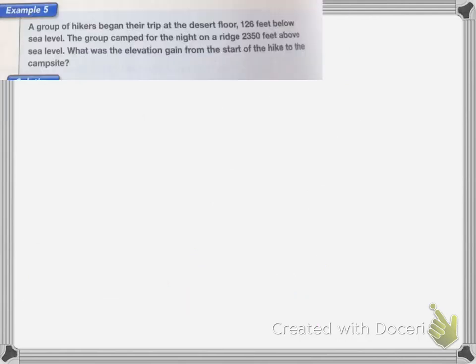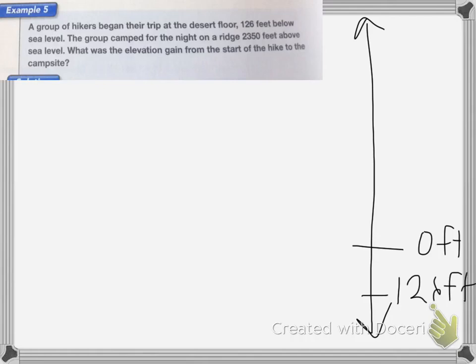This one, a group of hikers began their trip at the desert floor, 126 feet below sea level. When the group camped for the night on a ridge, 2,350 feet above sea level, what was the elevation gain from the start of the hike to the campsite? So if we draw an elevation table, sea level is zero, zero feet. So they started down here at 126 feet below sea level. They are then going to climb up to 2,350 feet. So I need to figure out how much is between that 126 feet below sea level to the 2,350 feet above sea level.